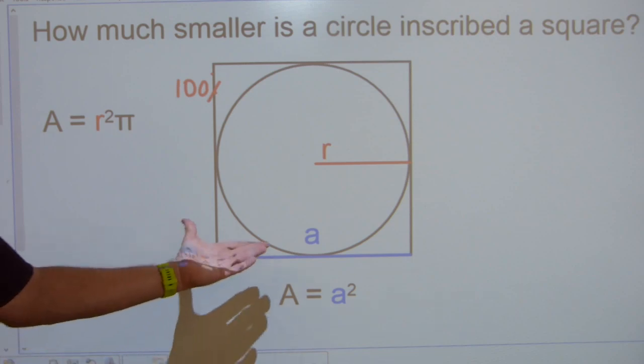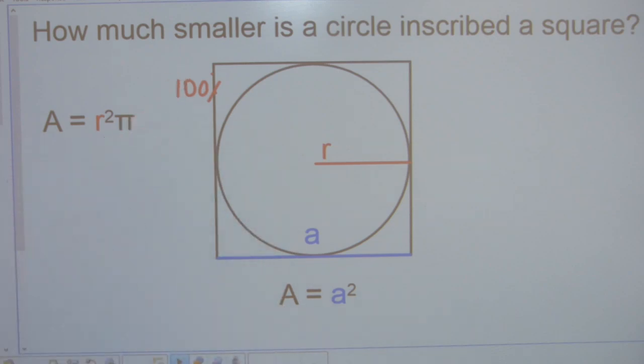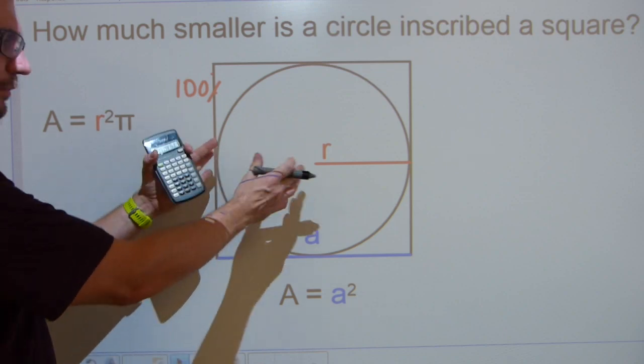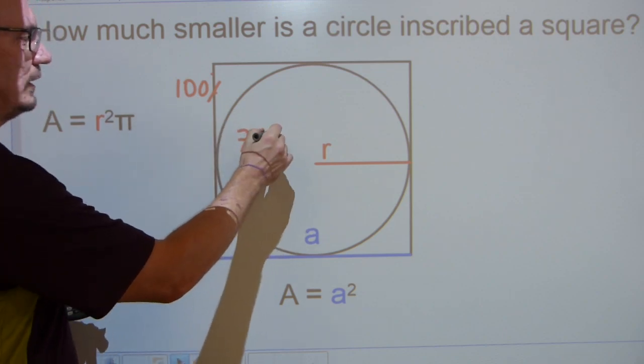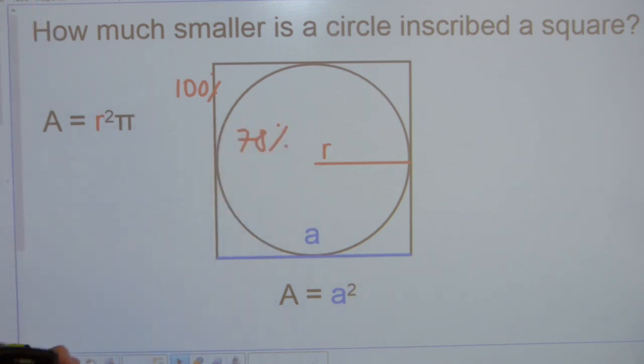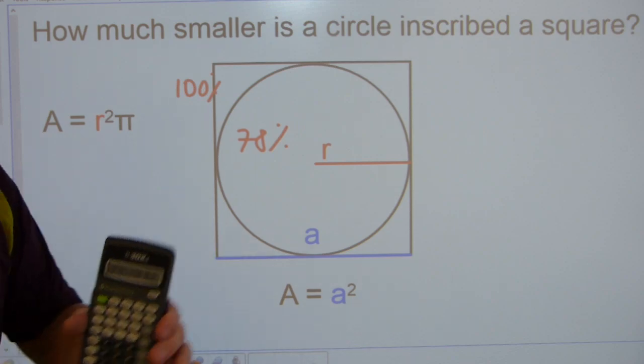It doesn't say the square, but if the area of the square is being 100%, then the area of the circle will be about 78.5%, whatever, plus change. It's an infinite decimal number.